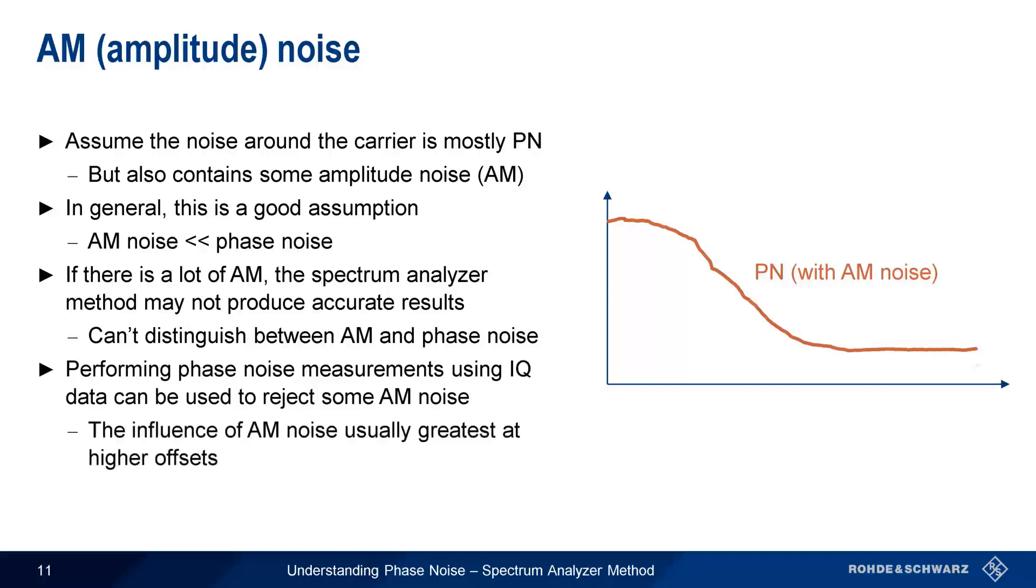It's worth noting that the influence of AM noise is usually greatest at higher frequency offsets from the carrier, so the benefits of this approach become more noticeable the further out we measure.